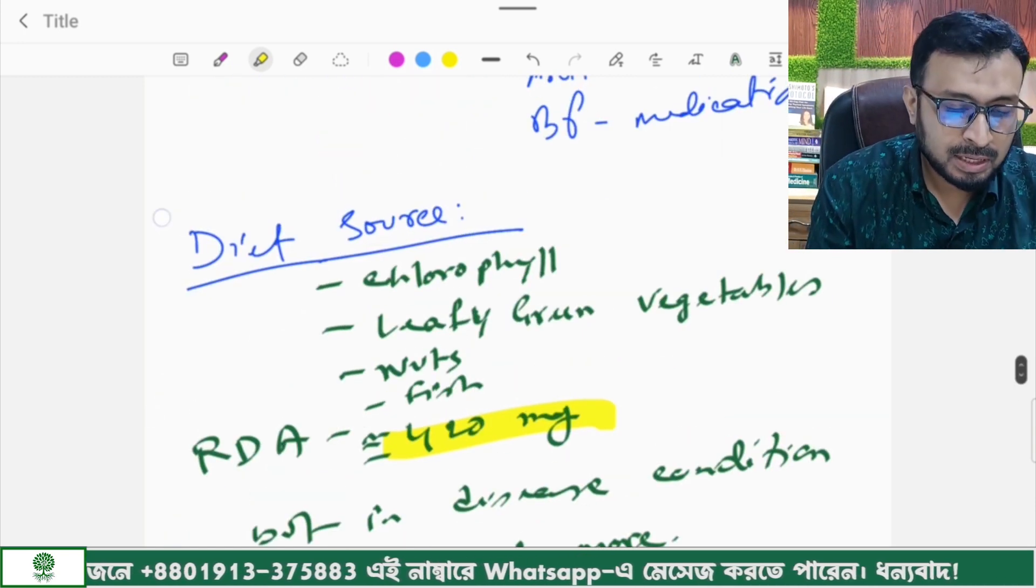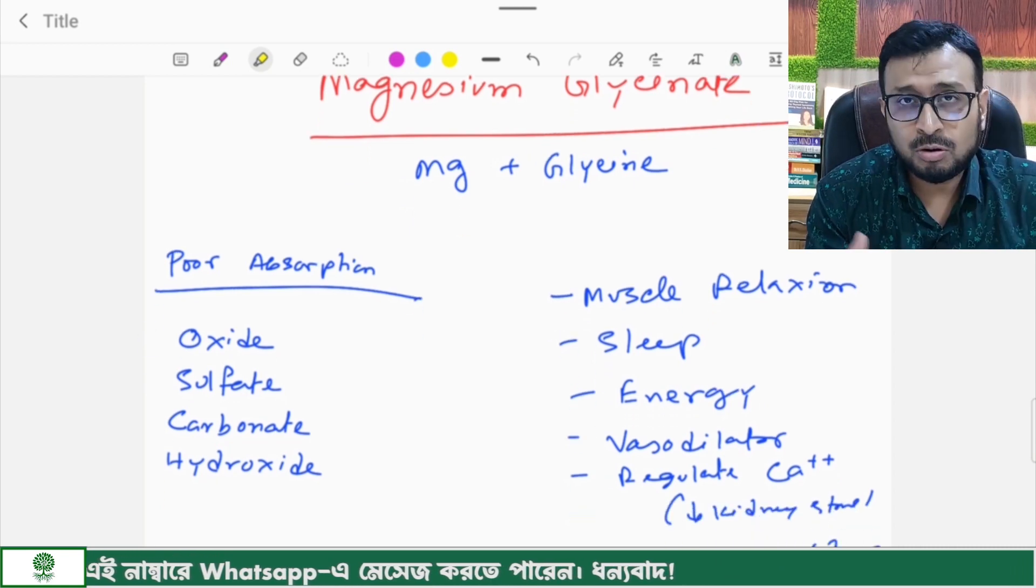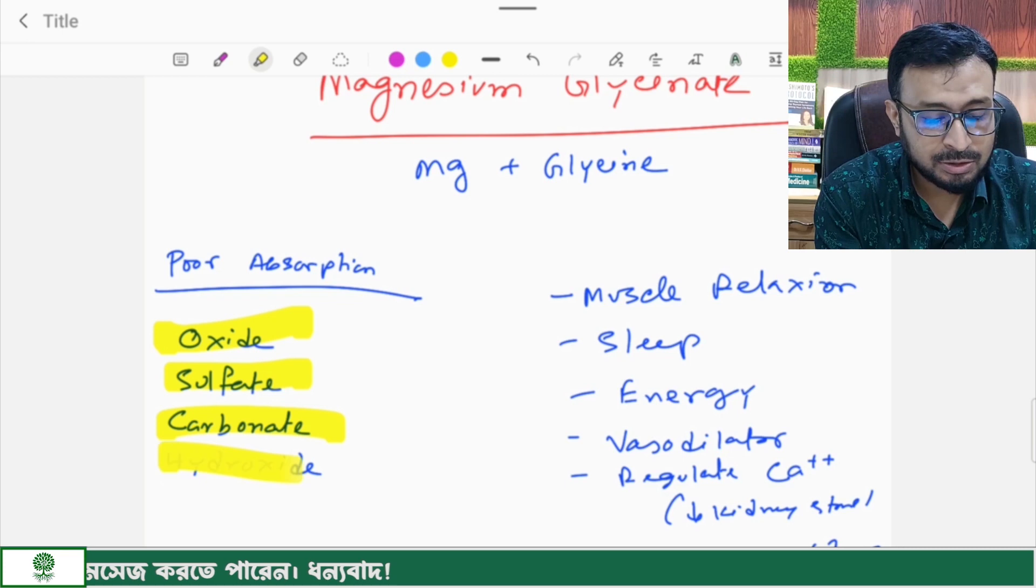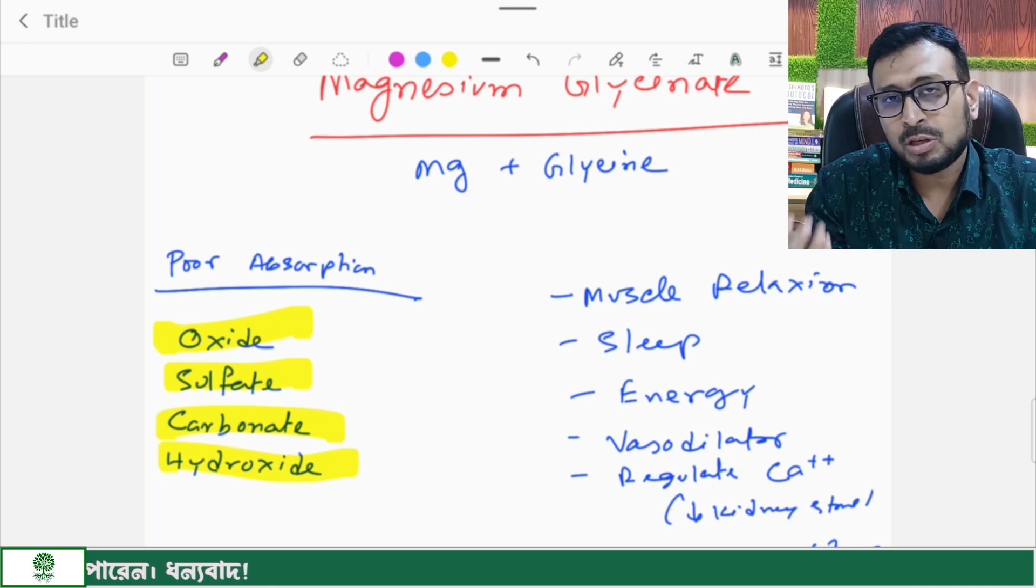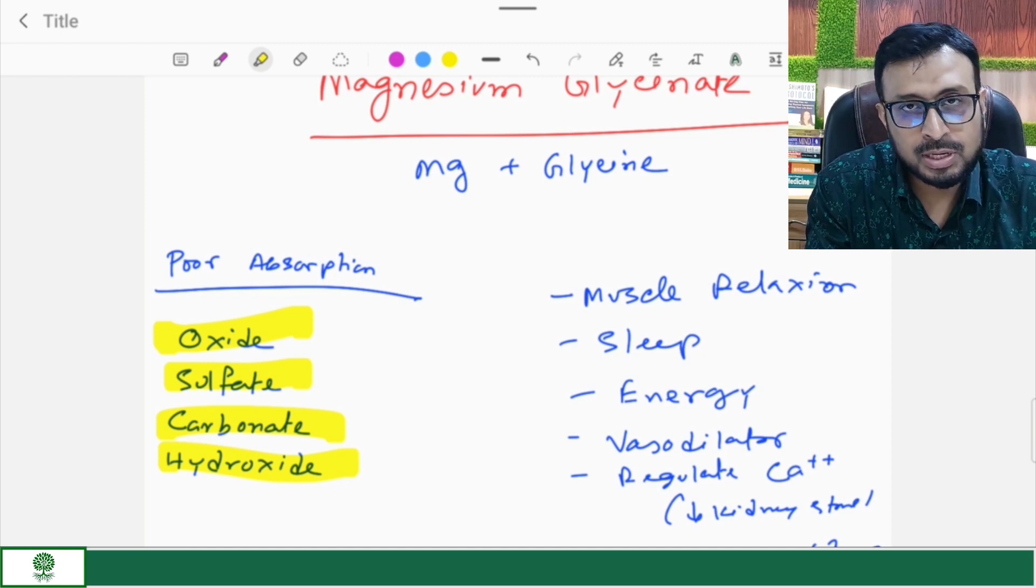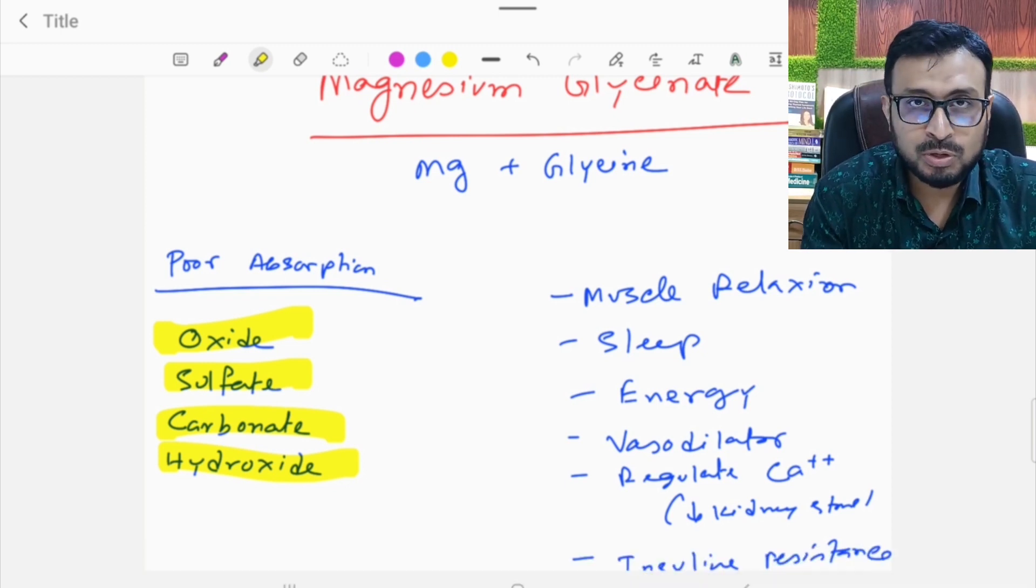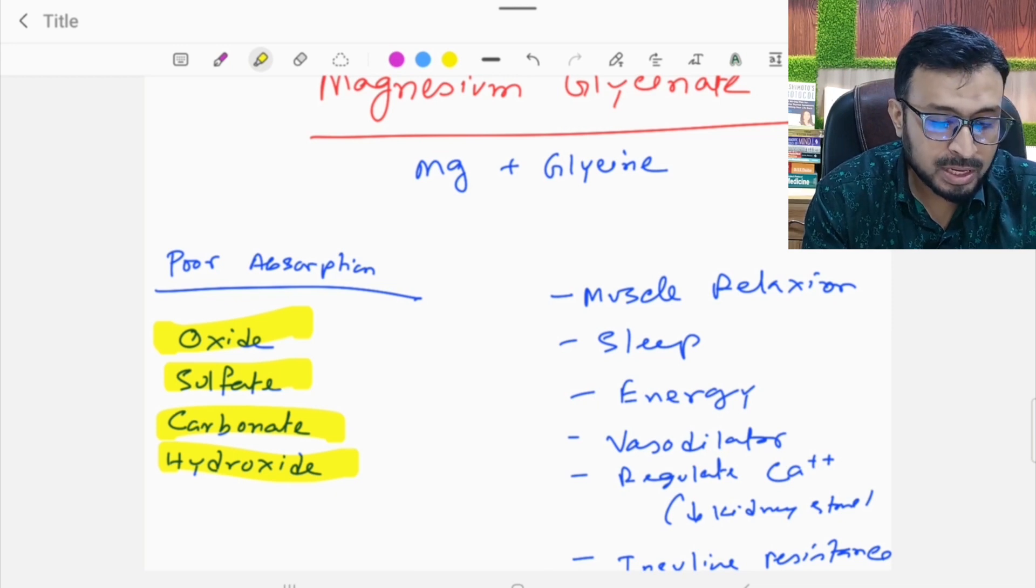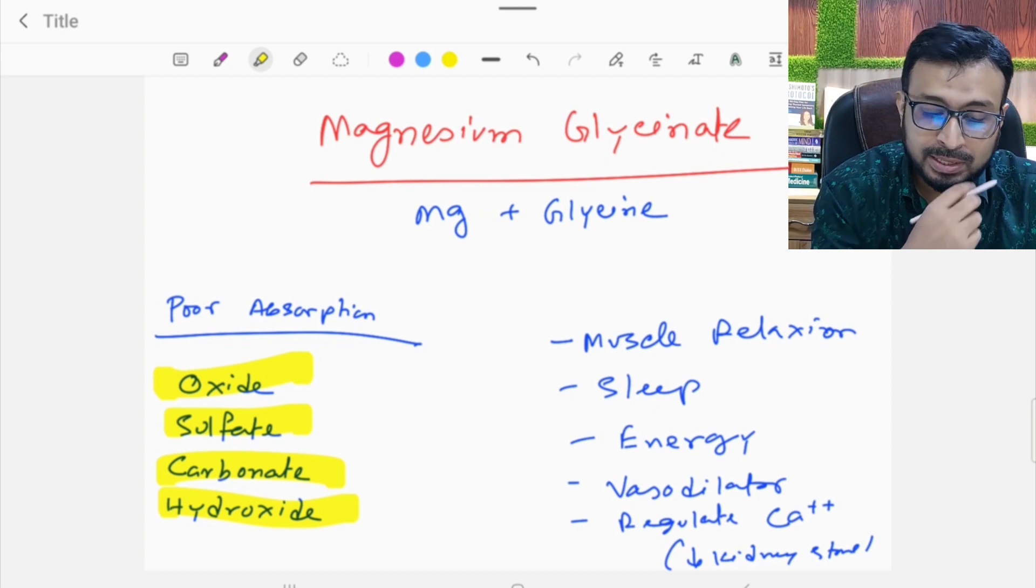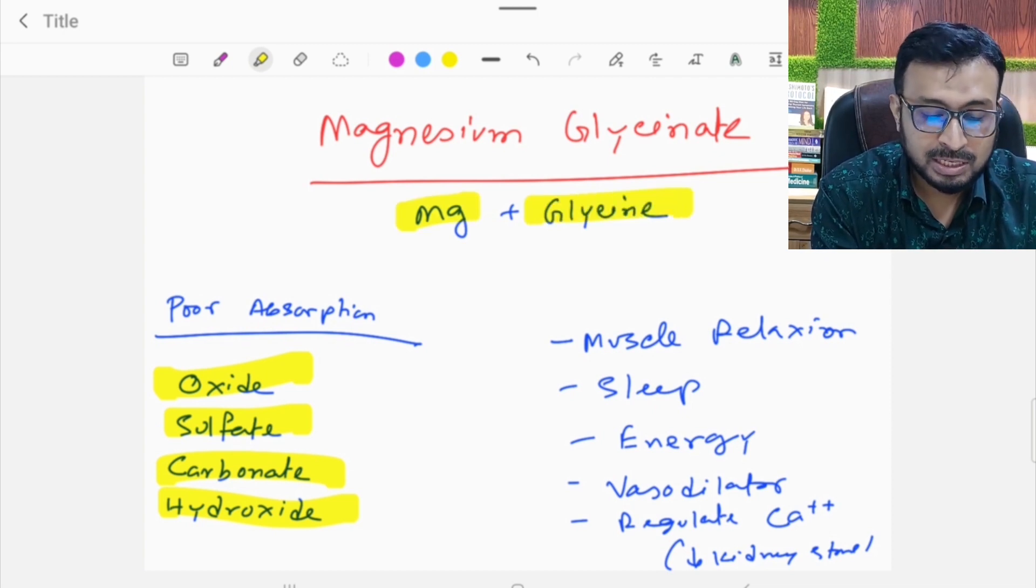We've talked about magnesium glycinate because magnesium has many forms. There's magnesium oxide, sulphate, carbonate, and hydroxide. These are less absorbed by the gastrointestinal tract.